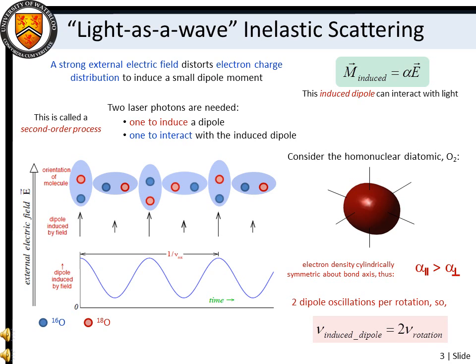For example, consider the rotational motion of a homonuclear diatomic molecule. If the molecule is aligned along the applied electric field, its electronic distribution can be polarized to a greater extent than if it were aligned perpendicular to the field. This is referred to as polarizability anisotropy. Thus, as the molecule rotates, the induced dipole moment oscillates sinusoidally at twice the rotational frequency.